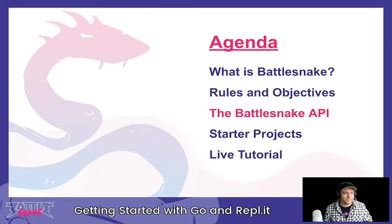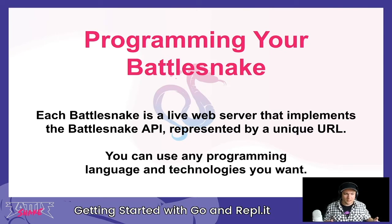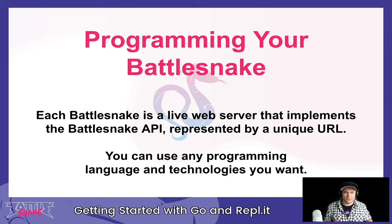Let's talk about the API that developers use to play the game. Developers program a live web server that implements this API. You take your code, deploy it somewhere live on the internet using your favorite cloud provider or hosting service, and the game engine sends API requests to your server asking how it wants to move in different situations. How you implement your response dictates how your BattleSnake behaves.